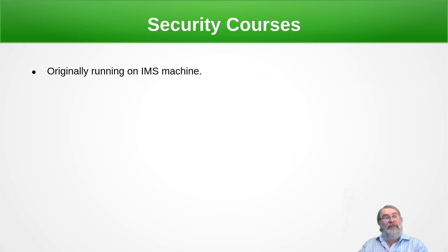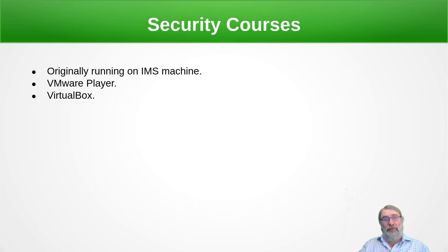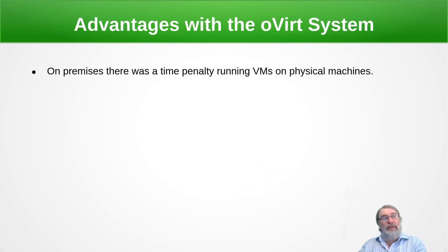The security courses were all originally running on the local IMS workstations, using things like VMware Player and VirtualBox to provide students with virtual machines so they could learn the different operating systems and security aspects. Most of these are now moved on to oVirt. One advantage with oVirt is there's a time penalty eliminated — on the IMS system, at the beginning of lessons students had to download and restore machine images, and at the end save them. It was also less flexible for timetabling purposes.